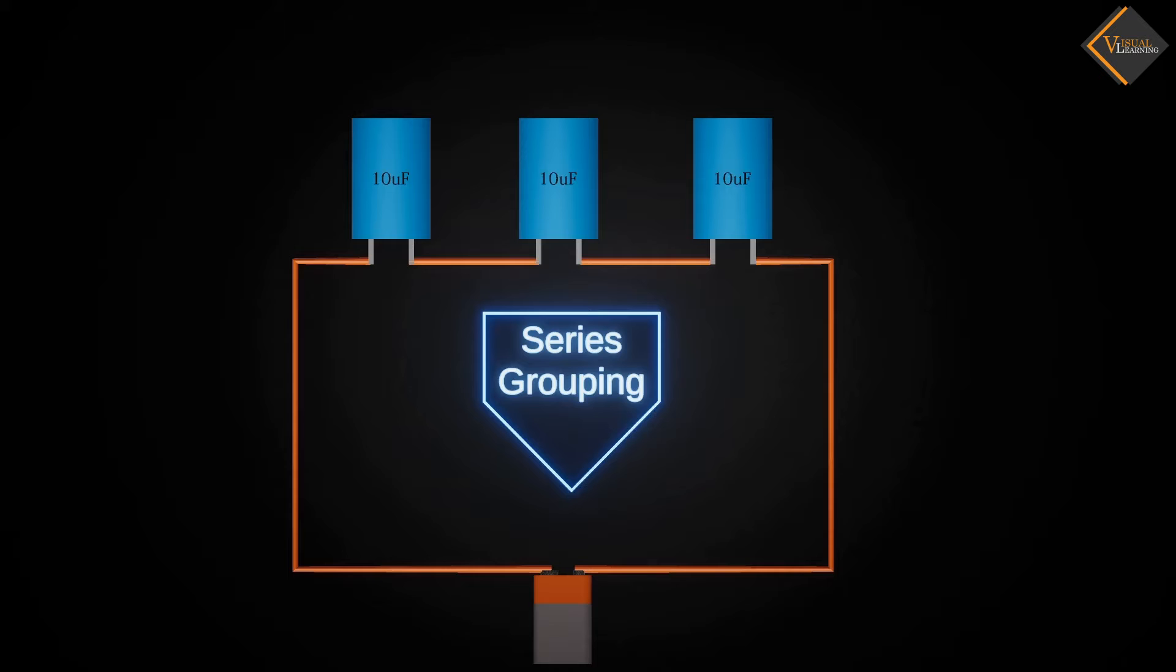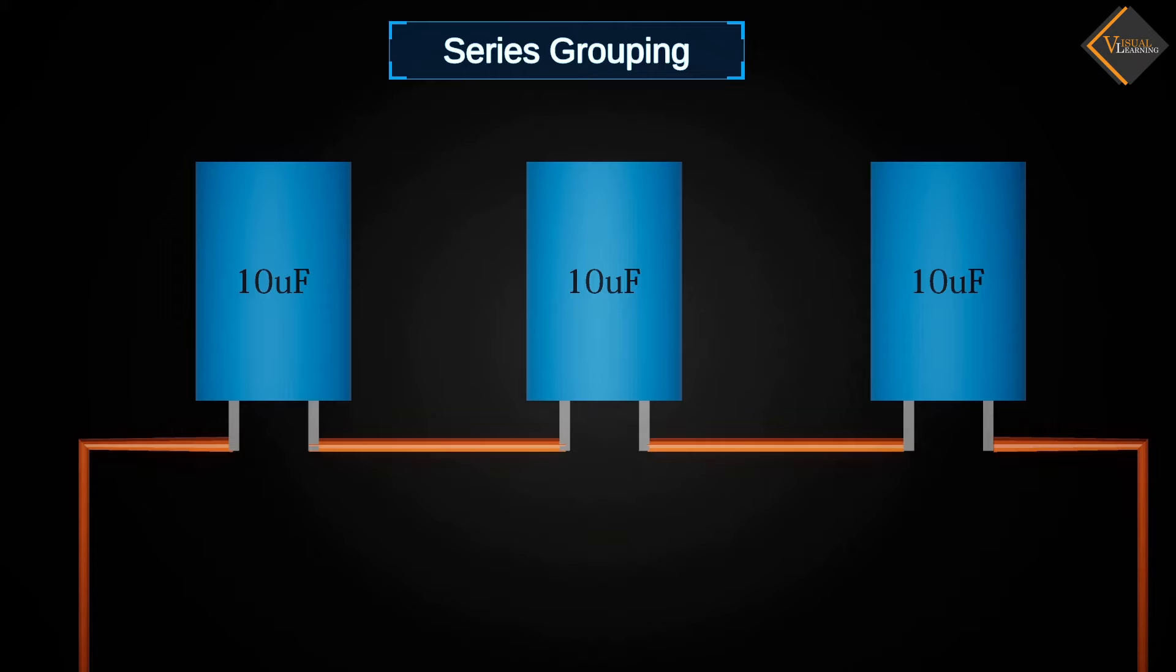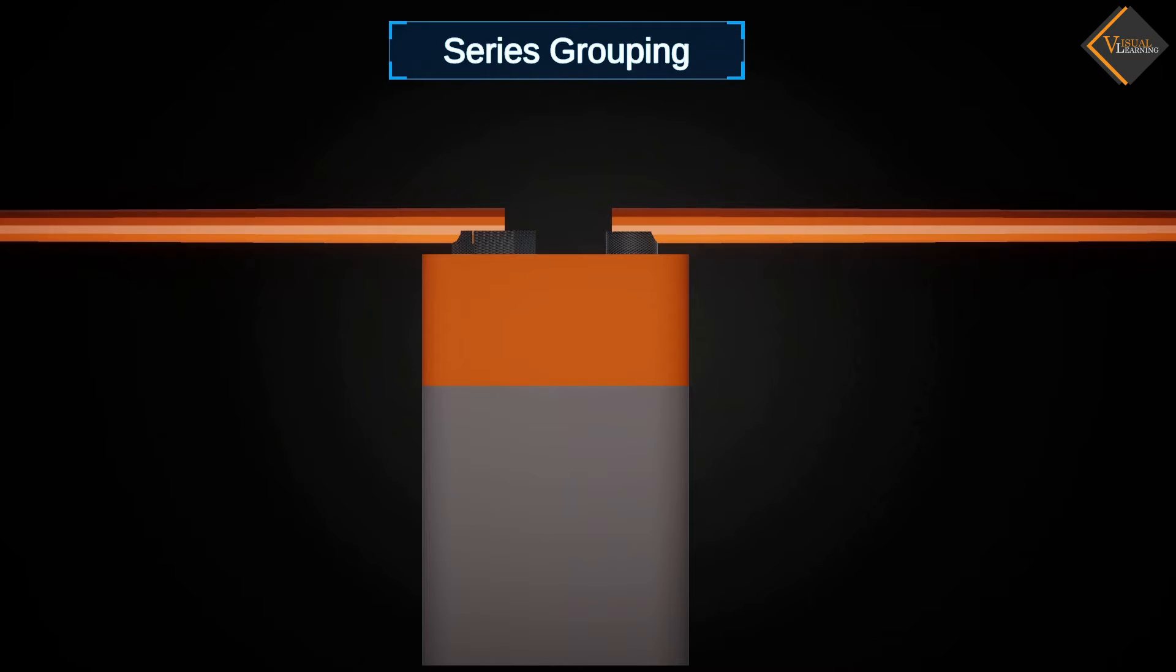Series Grouping. When capacitors are connected end-to-end, we call it series grouping. In the animation, we see three capacitors connected in series through wires to a battery.